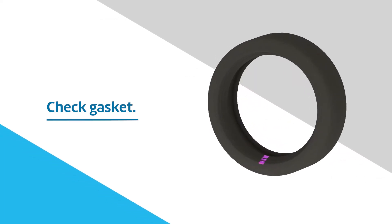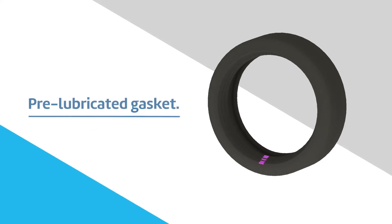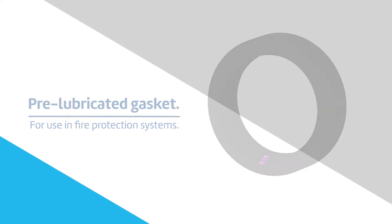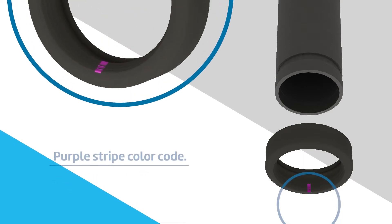The FP7400 Rigid Light Coupling has a pre-lubricated Grade E EPDM Type A gasket intended for use in fire protection systems installed in accordance with NFPA 13 standard sprinkler systems. The gasket is identified by a purple stripe color code.